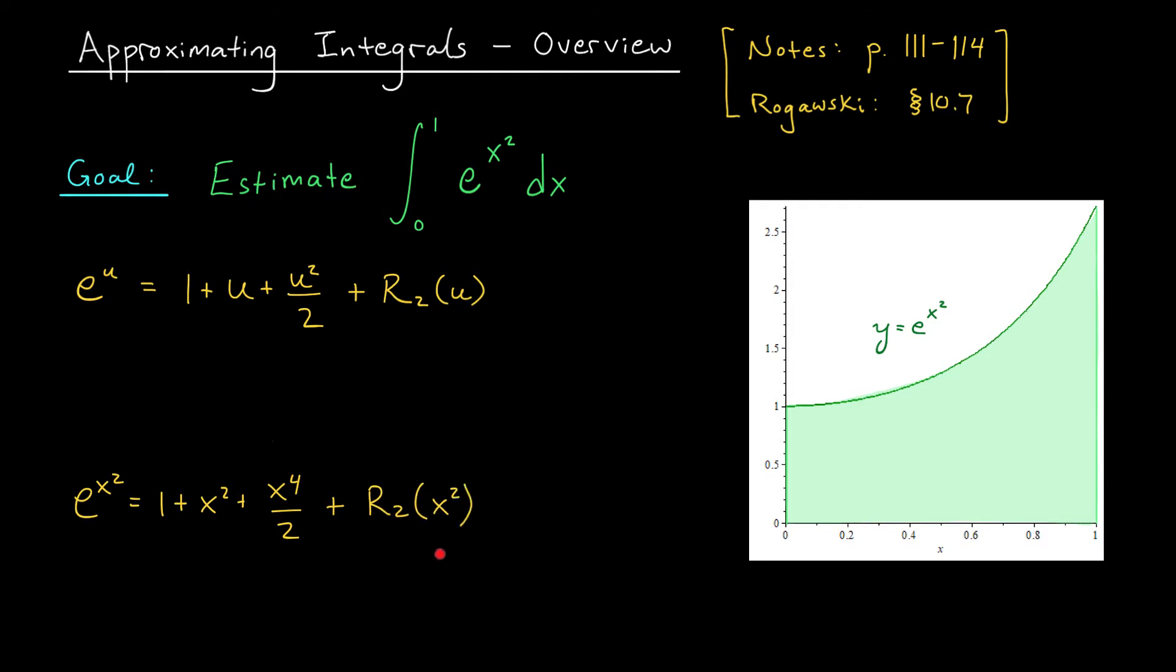Our next job will be to integrate this expression from x equals 0 to x equals 1. But what do we do about this remainder term? Maybe your gut tells you just discard it. After all, e to the x squared should be pretty close to this polynomial. Well, that's one option, but it's probably not a great choice. Because if we throw out the remainder term, we have no way of knowing how close our integral approximation is to the true value of this integral. So rather than throwing out the remainder, we'll incorporate it into our calculation.